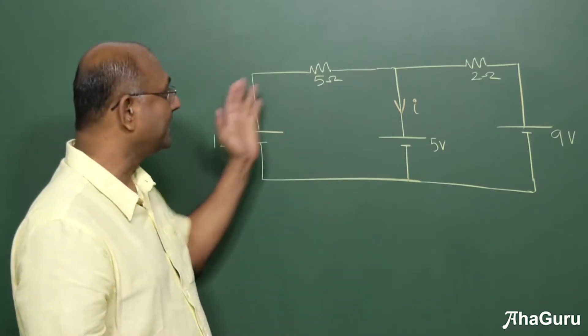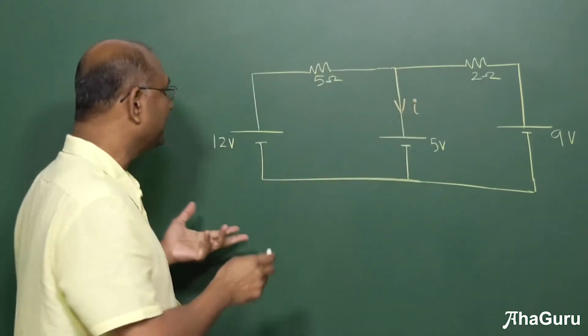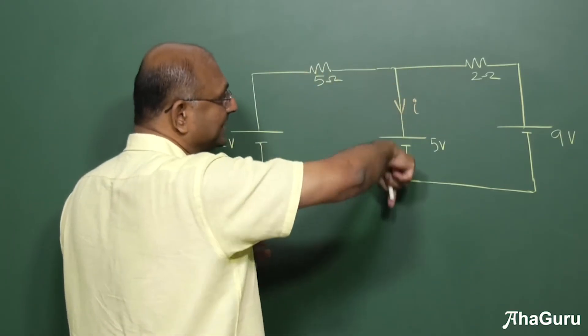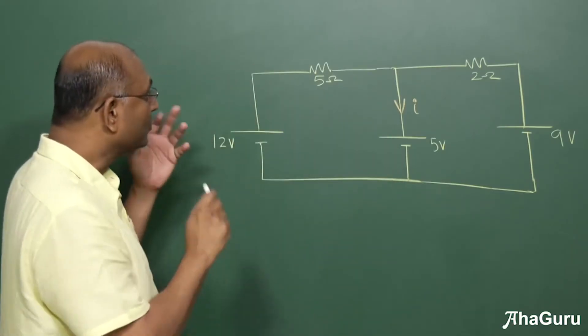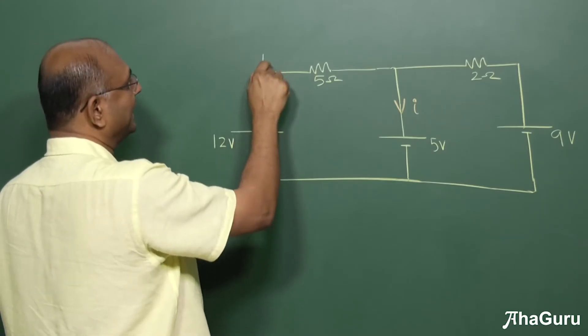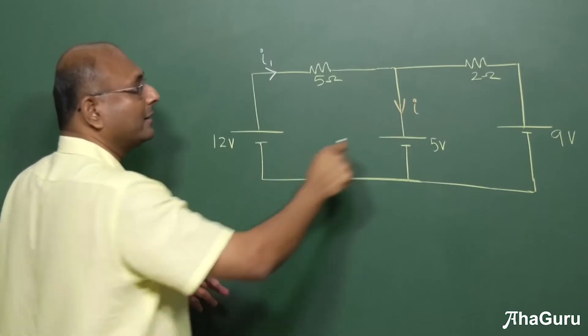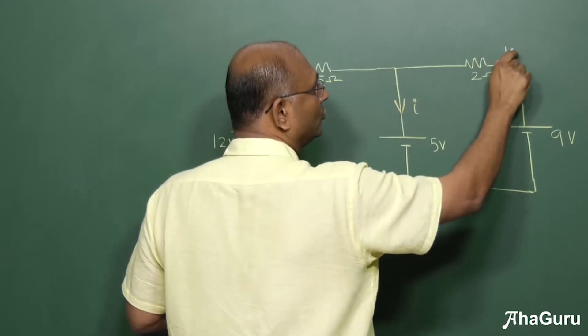For example, let's take a question like this. This is a circuit question, and the question that's asked is, what is the current through this 5-volt battery? The usual way of solving the problem would involve things like assuming this current is I1, that current is I2.